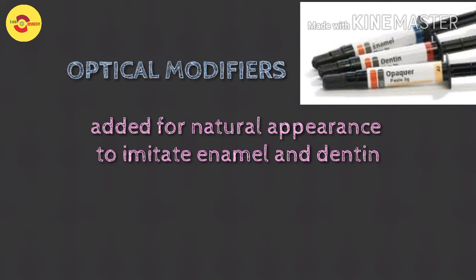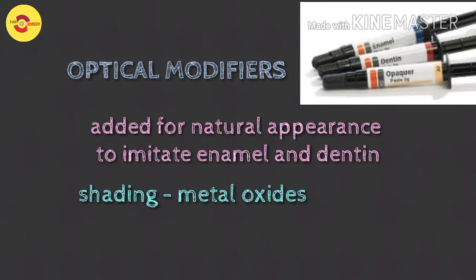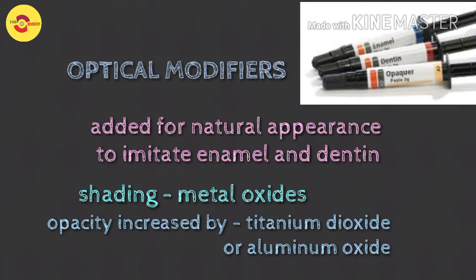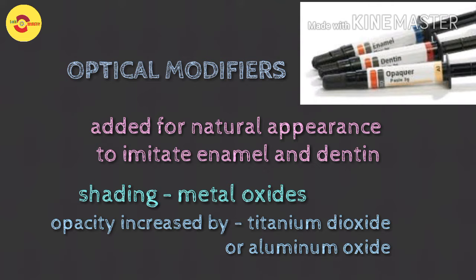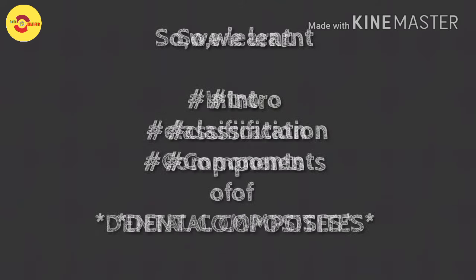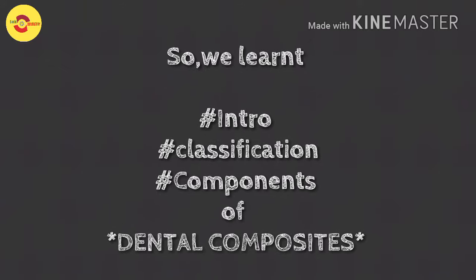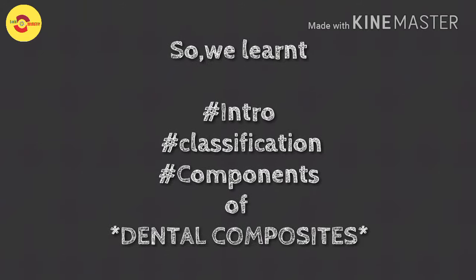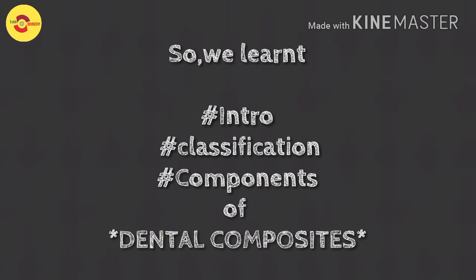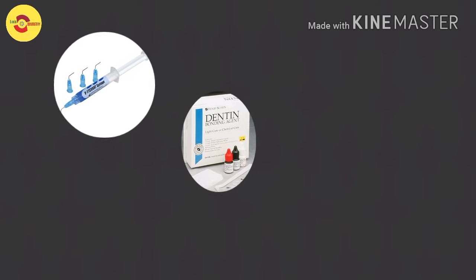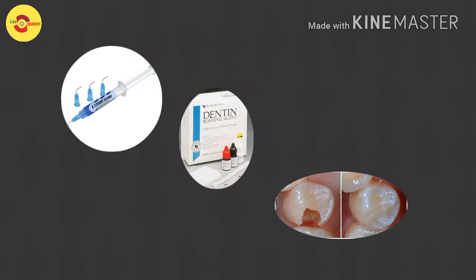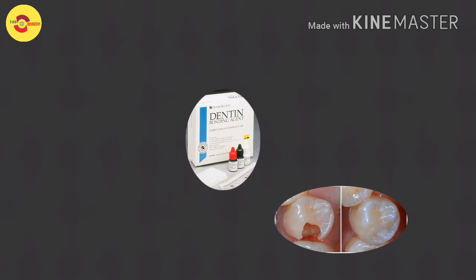The pigments usually consist of minute amounts of metal oxide particles. To increase opacity, the manufacturer adds titanium dioxide or aluminium oxide. Thus, in this video we have seen what composites are, what they contain, and the classification commonly used. In further videos, we will deal with acid etching, dentin bonding systems, and how composite is usually placed in a cavity.